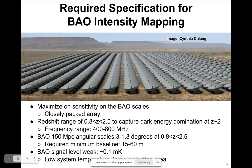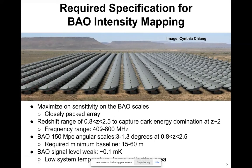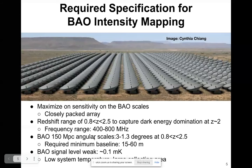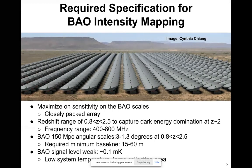The redshift range we are looking at is 0.8 to 2.5, so that we can capture the domination of dark energy at a redshift of around 2. This translates to a frequency range of 400 to 800 MHz. The BAO scales have an angular scale of 1.5 degrees, translating to 1.3 degrees within IRAQS's average redshift of interest. To detect these BAO scales, we need a minimum baseline of between 15 to 60 meters.